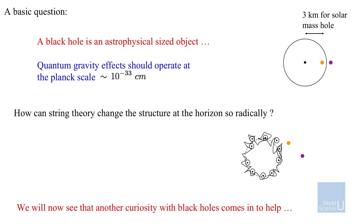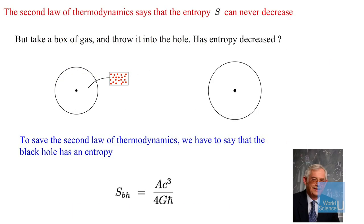Now we come back to the question: how did physics which happens at the quantum gravity scale come to change something on the scale of kilometers? String theory is supposed to not change anything on the scale of meters, and yet somehow everything has radically changed all the way up to the horizon. For one million solar masses in the center of our galaxy, the radius is about one million kilometers, and there it has changed over a million kilometers. We have to answer this question: how did quantum gravity become so important? The black hole is an astrophysical-sized object, and quantum gravity effects should operate at the tiny scale of 10^{-33} cm. For a solar mass black hole occurring three kilometers from here, how can the structure change so radically? For that we go back to the work of Jacob Bekenstein, which I was mentioning at the start of the talk.